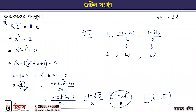So if you want to add omega to omega, you will have to ask omega to omega. Then you will have to find the answer to the question. So let us know: 1, omega, omega square — if you have these three points, when the three points are the same, the two points are the same.